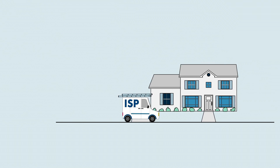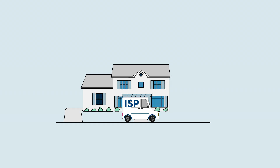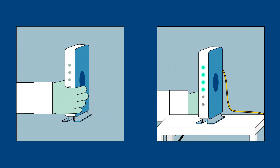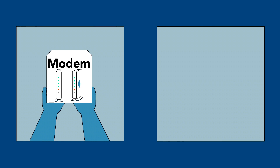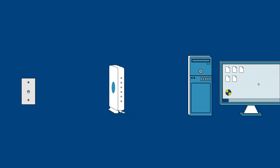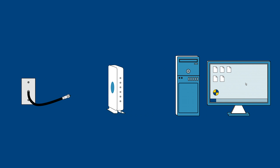They will usually need to send a technician to your home to turn on your connection. Your ISP may also give you a modem and set it up for you. But if you prefer, you can buy a modem from a computer store and set it up yourself. The basic idea is that you'll connect the modem to your phone jack or cable TV connection, and then connect your computer to the modem using an ethernet cable.